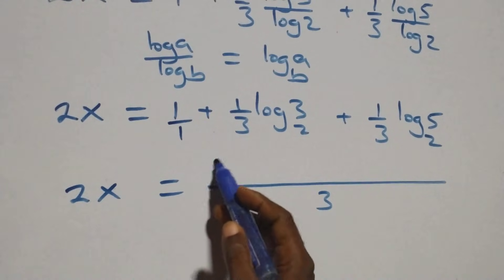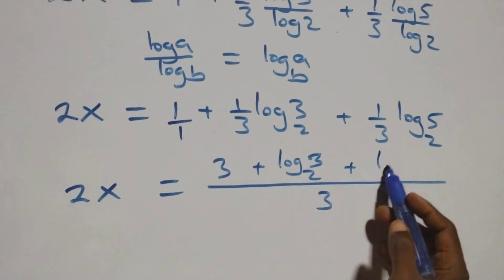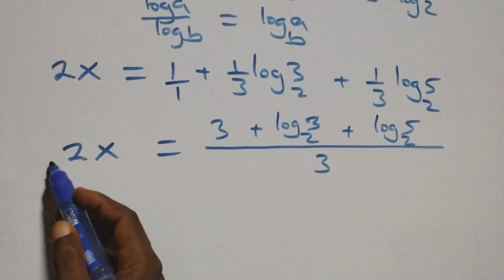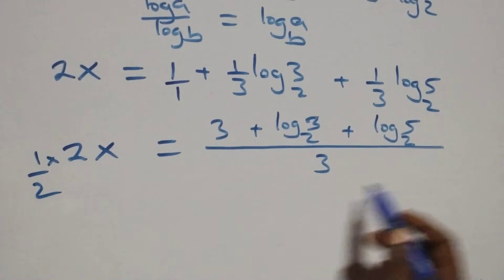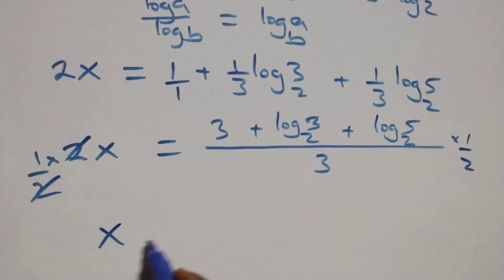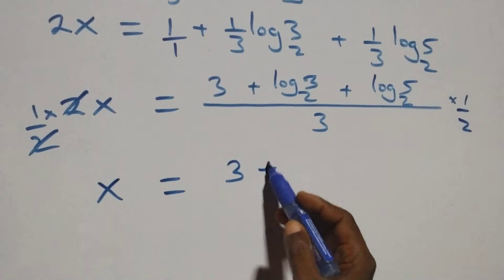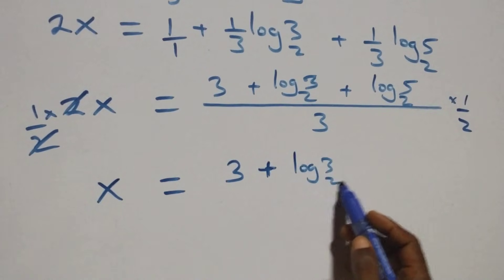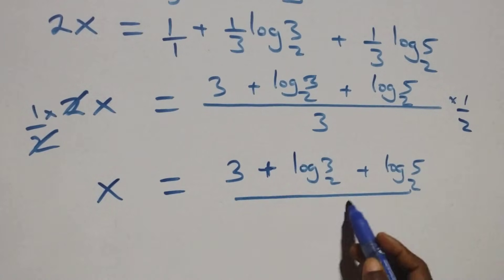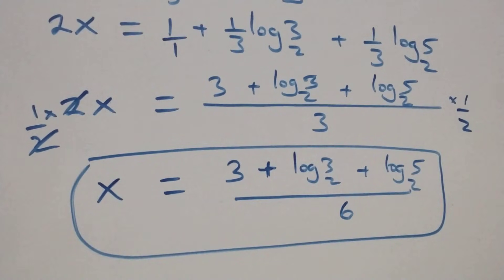Applying the change of base, we get 2x equals 1 plus (1/3)·log₂3 plus (1/3)·log₂5, which also can be written as 2x equals 3 plus log₂3 plus log₂5, all over 3. Then we multiply both sides by 1 over 2. The 2s cancel each other, and we get x equals (3 plus log₂3 plus log₂5) over 6. So the value of x is (3 + log₂3 + log₂5) · (1/6).